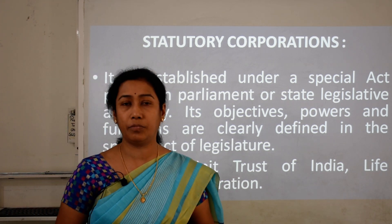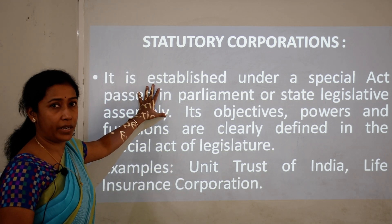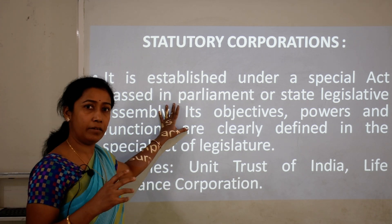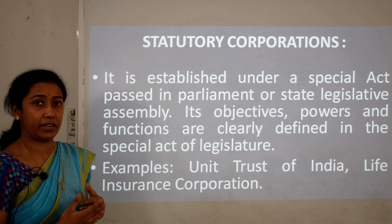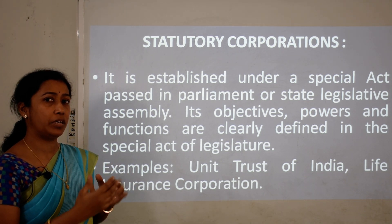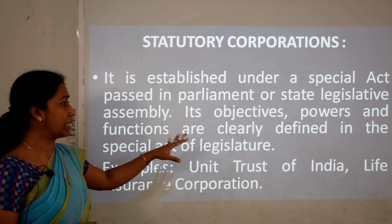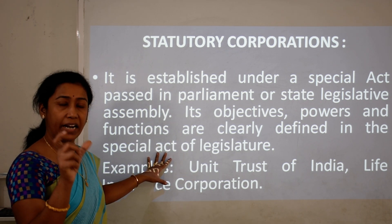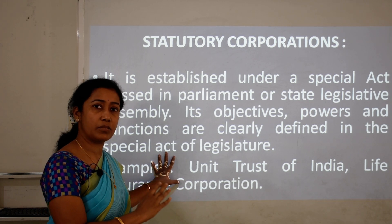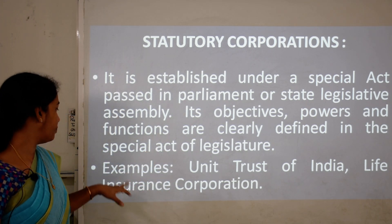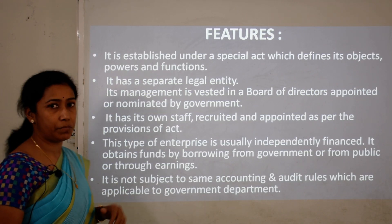The second form of public sector enterprises is statutory corporation. This kind of corporation is established under a special act passed in parliament. There is significant central or state government involvement. Its objectives, powers, and functions are clearly defined in the special act. Examples include UTI (Unit Trust of India) and Life Insurance Corporation.